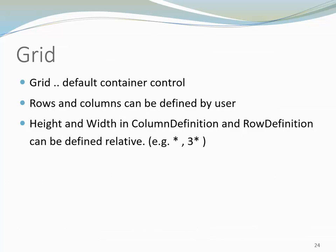Let's have a look at one last container control, the Grid. When you create a new Windows Presentation Foundation application, it includes a grid with one row and one column. In that sense, it can be considered the default container control. The number of rows and columns, as well as the size, can be defined by the user. We can specify the relative height and width by using stars. For example, if we have two rows where one row has height star and the other row has height 3 star, that means one row takes up 25% of the height and the other takes up 75%.